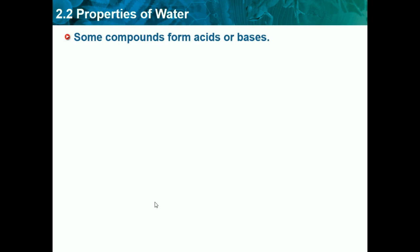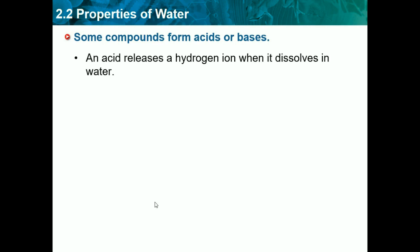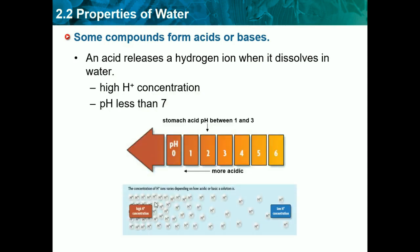Some compounds form acids or bases. An acid releases a hydrogen ion when it dissolves in water, so it has a high H+ concentration. Acids have a pH less than 7 on the pH scale, which goes from 0 to 14. Under 7 is acids and above 7 is bases. The closer you get to the extremes — 0 and 14 — the more acidic or basic it gets. In this diagram, you can see the acid side has a high H+ concentration with many H+ ions, while bases have very few.